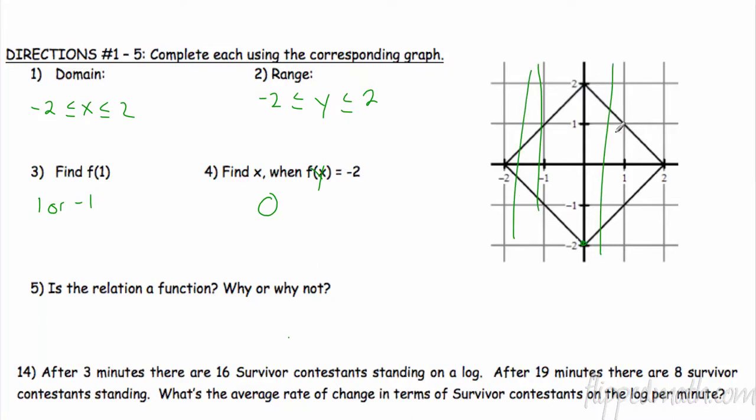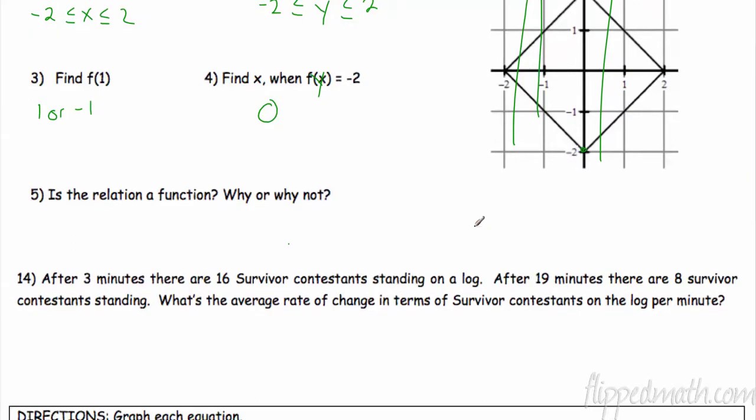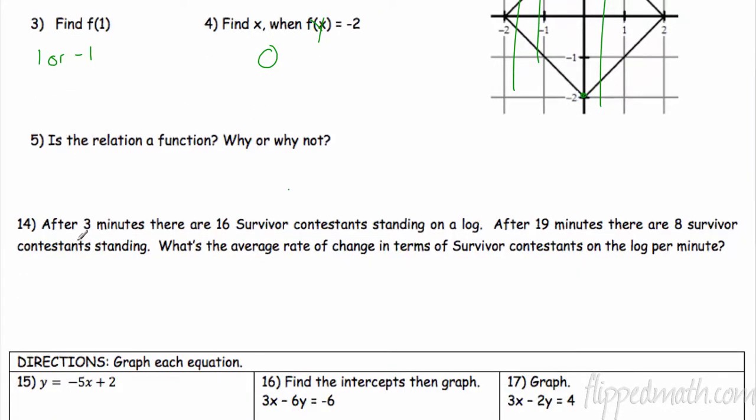Is it a function? Why or why not? No, because it fails the vertical line test. All right, when we come down here we have rate of change. Remember rate of change, we have to find some points: 3 minutes, 16 contestants; 19 minutes, 8 contestants. And I'm using my slope formula. Remember, y2 minus y1 over x2 minus x1. So that's 8 minus 16 over 19 minus 3. 8 minus 16 is negative 8, 19 minus 3 is 16. So that is negative 0.5.